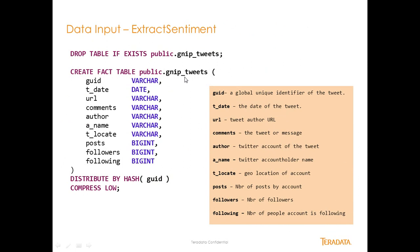This is our data input and it comes from data sets we bought from Gnip. It's made up of these fields: a global unique identifier as the first column, a t-date which is just the date of the tweet, a URL which is the tweet author's URL on Twitter, and a comment which is the actual Twitter message or tweet. The author is the Twitter account and their real name — we're going to protect that to keep PII safe. Also included are the location of the tweet, geolocation, how many posts they've had at that moment, how many followers, and how many people they're following.